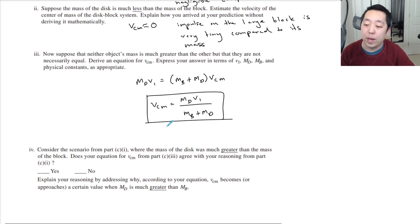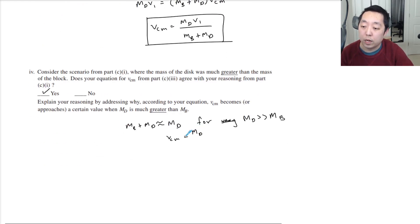Consider the scenario where MD is much greater than the mass of the block. Does your equation agree? We would say yes, because if MD is much bigger than MB, then in the denominator here, MB plus MD is approximately equal to MD for MD much greater than MB. So VCM equals MDV1 over MD, which is equal to V1.